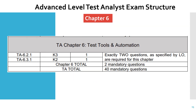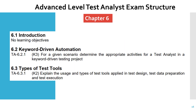The last chapter, chapter six — test tools and automation — will have two mandatory questions. Chapters one through six together make up all 40 mandatory questions. The first question type will be a scenario where you are asked to determine appropriate activities of a test analyst in a keyword-driven testing project. The second type requires you to know the usage of testing tools which can be applied in test design, test data preparation, and test execution phases. You need a solid understanding of testing tools from chapter six.